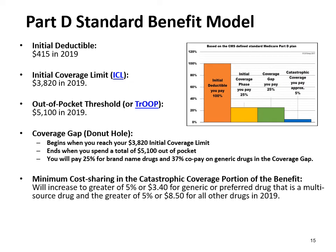The initial coverage limit, or ICL, benefit is $3,820. Once you reach $3,820, you enter the Gap or Donut Hole, where you are responsible for paying a share of the cost for your drugs — 37% for generics and 25% for brand drugs. Some plans provide free generic drugs in the Gap. Once you spend $5,100 out of pocket — referred to as Troop — in the Gap, you are entitled to catastrophic coverage, where your drug costs are $3.40 for generics and $8.50 for brand drugs.